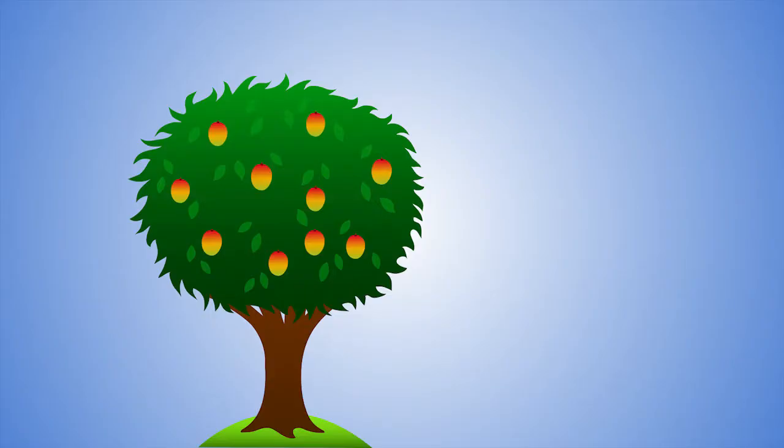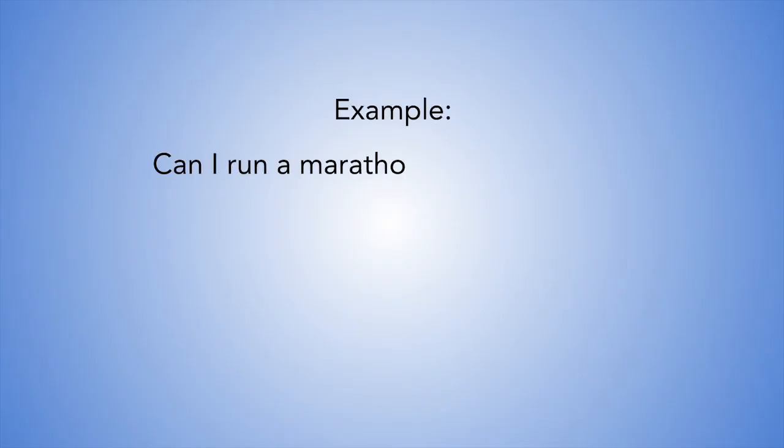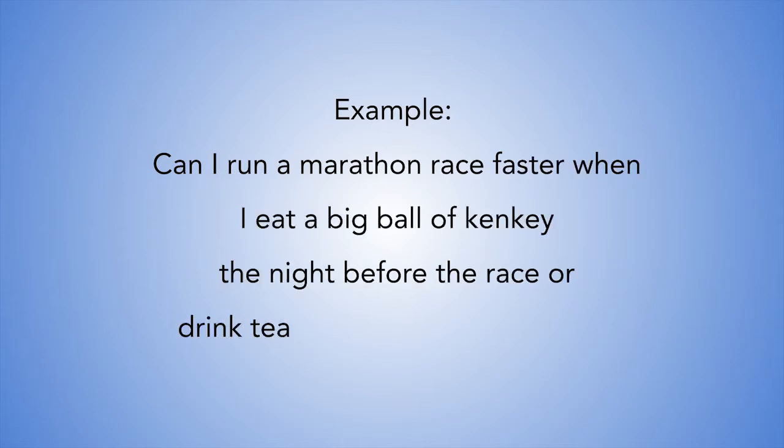What follows observation is to pose a clear question, or state the problem. Stating a question is the second step to embark on during this method. The question can be in the form of why, where, how, what, who, and so on. For example, why do fruits — for example, mango — fall down straight to the earth and not up? See to it that the question you pose is clear and precise, and that it makes sense pertaining to what you already know about the subject. For example, can I run a marathon race faster when I eat a big bowl of kinky the night before the race, or drink tea the morning of the race?